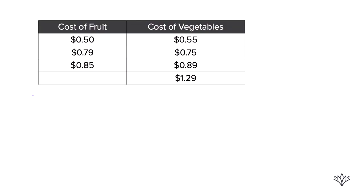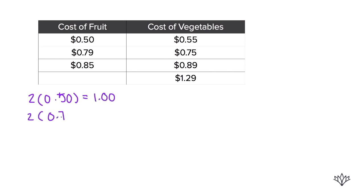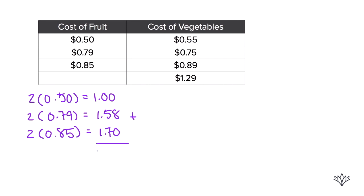Let's start with two of each fruit. The costs are 50 cents, 79 cents, and 85 cents. Two times 50 cents is $1.00. Two times 79 cents is $1.58. Two times 85 cents is $1.70. Adding those together — $1.00 plus $1.58 plus $1.70 — gives us a total cost for fruit of $4.28.